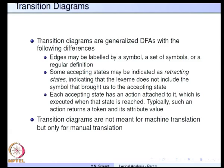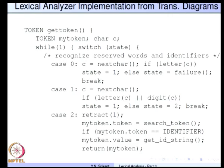To do a bit of recap: transition diagrams are generalized deterministic finite automata, but there are a few differences. The edges may be labeled by a symbol, set of symbols or a regular definition. Some accepting states may be indicated as retracting states, and when we reach a retracting state we do not consume the symbol which brings us to that state. With each accepting state there is an action which is executed when that state is reached. Typically we use this action to return a token and its attribute value, but transition diagrams are meant for manual translation and not for machine translation. Let us understand how exactly transition diagrams can be translated to lexical analyzers.